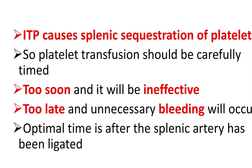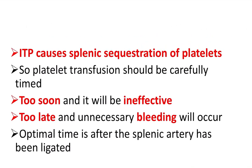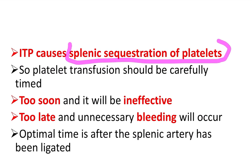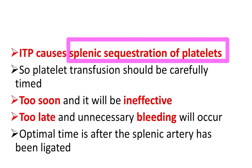In the case of ITP, there is splenic sequestration of platelets — meaning in idiopathic thrombocytopenic purpura, platelets are usually destroyed by the splenic tissue. So when the spleen is present, we should not give platelet transfusion because the platelets will be destroyed by the spleen. Platelet transfusion should be carefully timed: too soon and it may be ineffective as platelets are destroyed by the spleen; too late and it causes unnecessary bleeding.